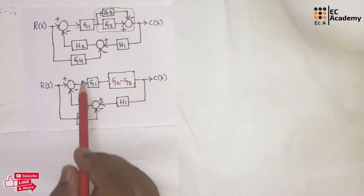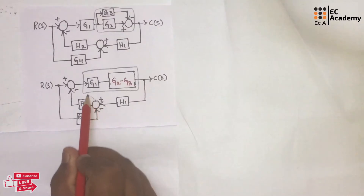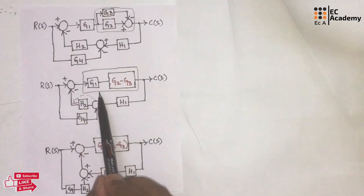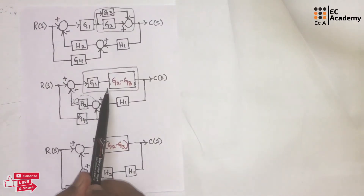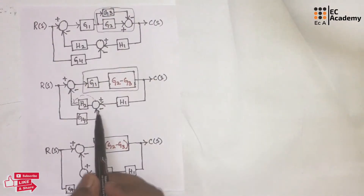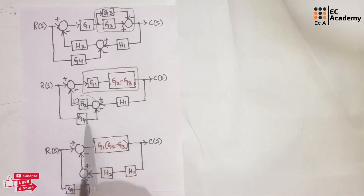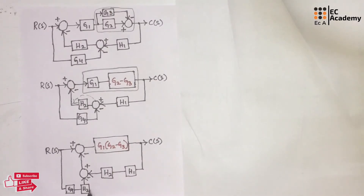Now in this block diagram, you can see these two blocks are in series, and this summing point — let us shift it after the block H2. These two blocks are simplified into a single block with transfer function G1 times (G2 minus G3), since they are in series. We have shifted the summing point after block H2, and at that summing point we have written one more transfer function which is H2. Along with G4, we have written H2, which was not present in the previous block diagram.